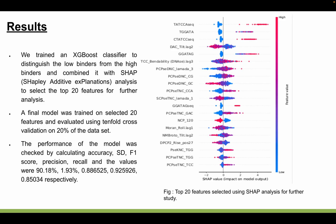We trained an XGBoost classifier to distinguish low binders from high binders, and combined it with SHAP analysis. From the SHAP analysis, we selected the top 20 features listed in this plot. As we can see, most of the features belong to unpaired probability, autocorrelation, and covariance.